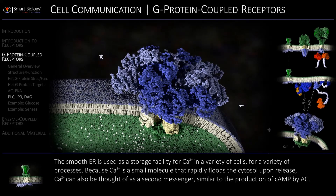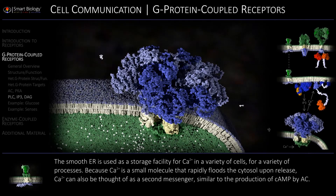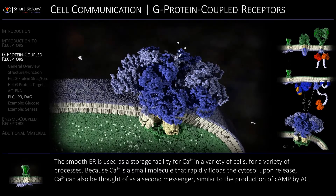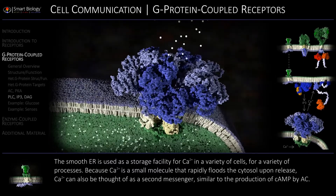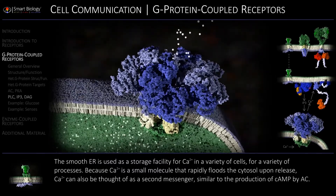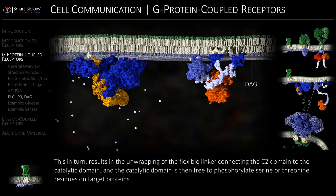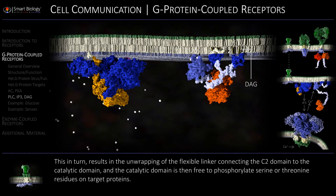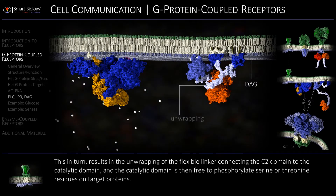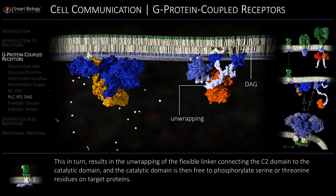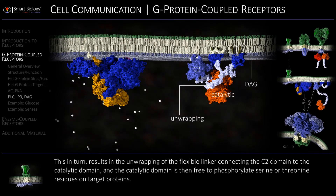Because calcium is a small molecule that rapidly floods the cytosol upon release, calcium can also be thought of as a second messenger. This, in turn, results in the unwrapping of the flexible linker connecting the C2 domain to the catalytic domain.